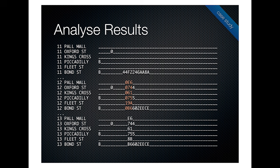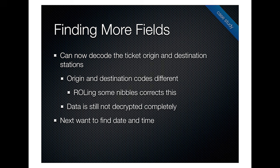We can repeat that for the destination station as well. The values for origin and destination fields were different, which isn't entirely surprising since we don't know the full algorithm yet. We eventually found that rolling some of those nibbles would make them the same — so there's clearly some combination of XOR and rolling going on.